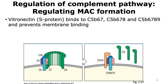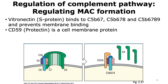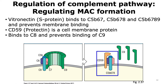CD59 is another example of a cell membrane protein able to inhibit membrane attack complex formation. It does so by binding to the complement protein C8 and thereby prevents binding of the C9 proteins. This results in the inhibition of formation of the membrane attack complex.